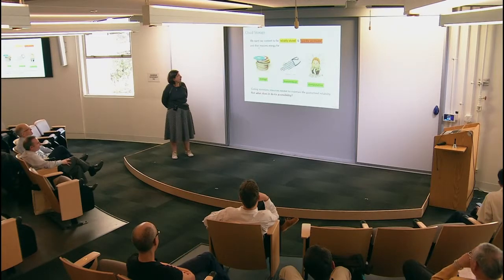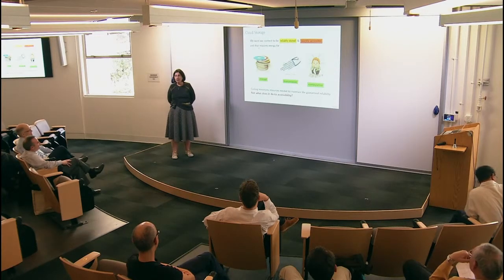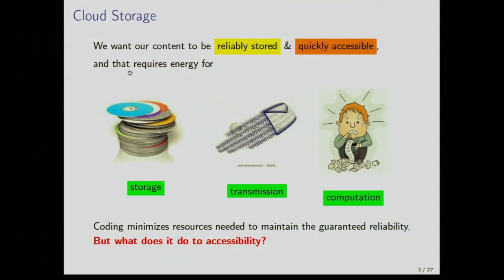In cloud storage, what we want is that our content be reliably stored and also quickly accessible — we don't want it forgotten for centuries. That requires energy, and lately it has been shown that coding minimizes resources needed to maintain guaranteed reliability. What I want to look into is what codes can do for accessibility, or what codes already implemented for reliability are doing to accessibility.